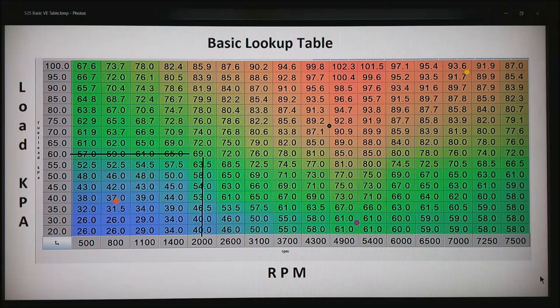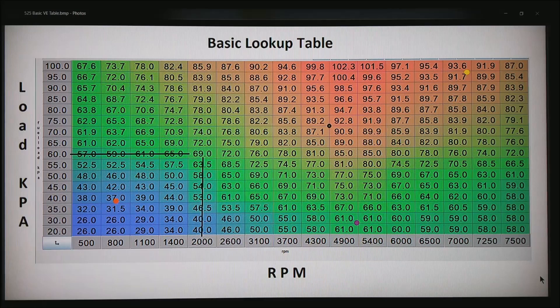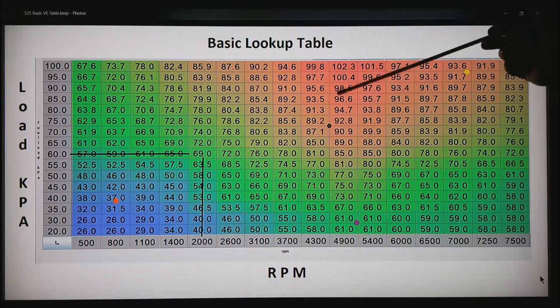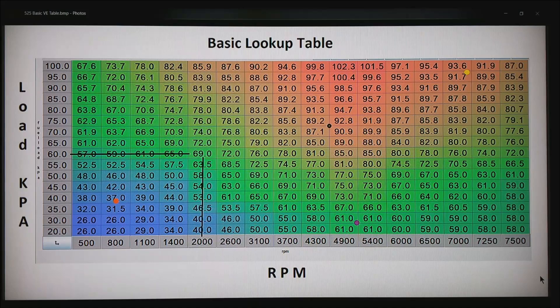If the dot is somewhat closer to say the 92.8, we put a bigger weighting on that number, but these other numbers come into effect.